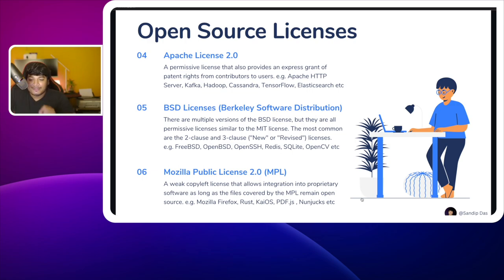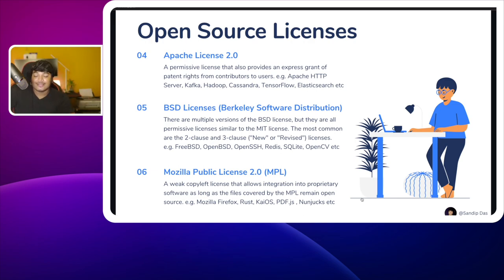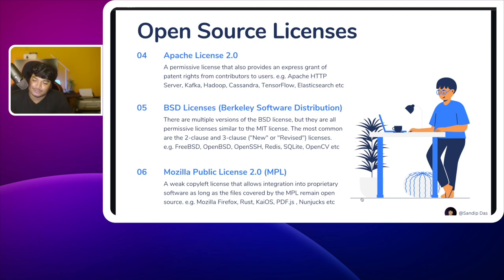The fifth license is the BSD License, or Berkeley Software Distribution. There are multiple versions, but they are all permissive licenses similar to the MIT license. The most common are the two-clause and three-clause versions. Examples include FreeBSD, OpenBSD, OpenSSH, Redis, and OpenCV.